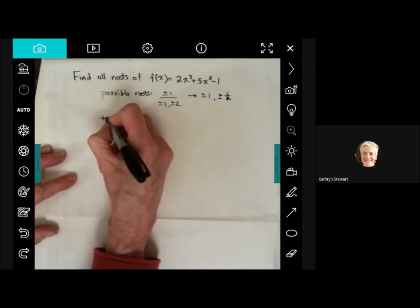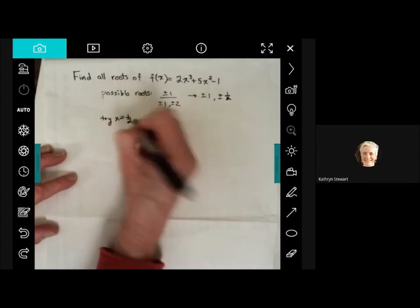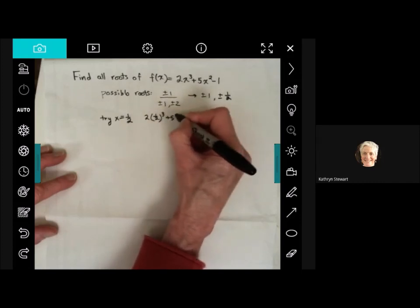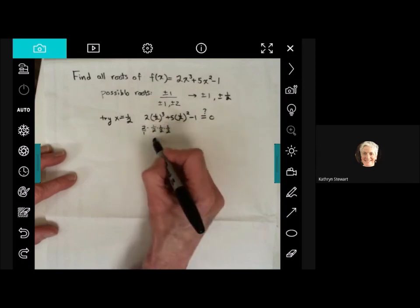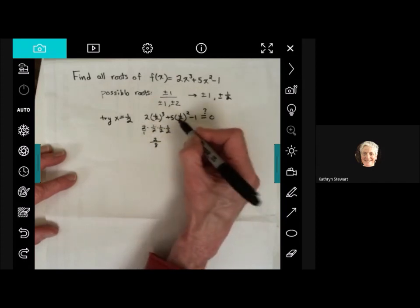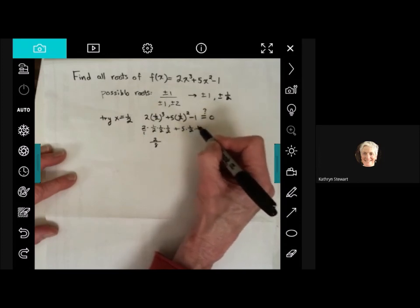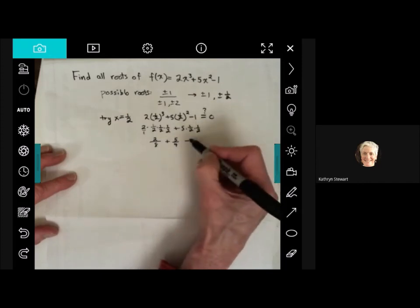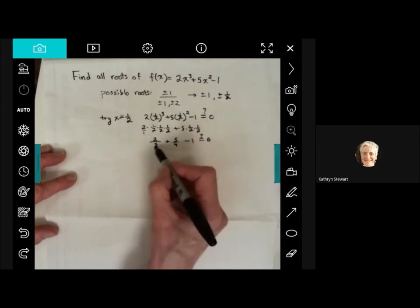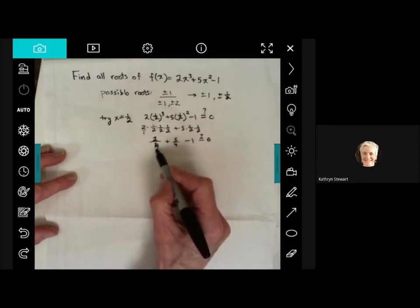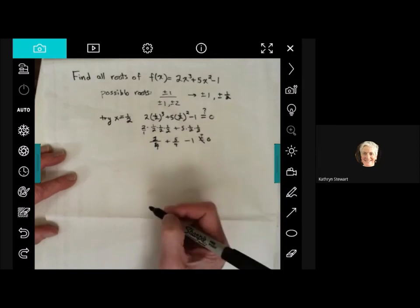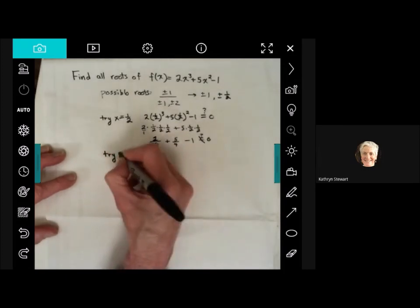Let's try 1 half. And again, I'm looking to see if that gives me a 0, because if I get a 0 for a y, that is going to be a root. That 2 in there, so that's going to be 2 over 8. 5 times 1 half times 1 half, 1 half times 1 half is 1 fourth times 5, that's 5 fourths minus 1. And I want to see if that equals 0. 2 eighths, that's just 1 fourth. So 1 fourth plus 5 fourths, that's 6 fourths, that's 1 and 1 half. That's not going to work.